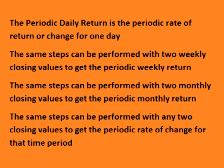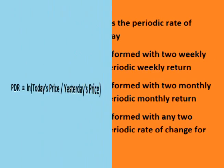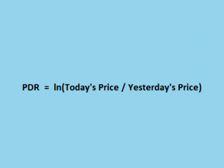The periodic daily return is the continuously compounded rate of return for one day. We could also follow the same steps using two monthly prices to get the periodic monthly return, or any two time frames to get the periodic rate of return for that time period. The periodic daily return, or PDR, is the periodic rate of change of price for each trading day. It is calculated by taking the natural log of the closing price of an asset divided by the previous day's closing price.